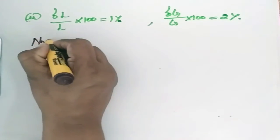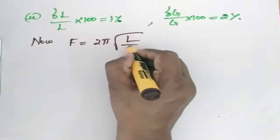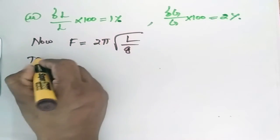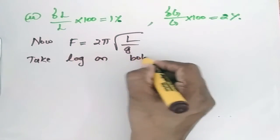Now T = 2π√(L/g). Take log on both sides.